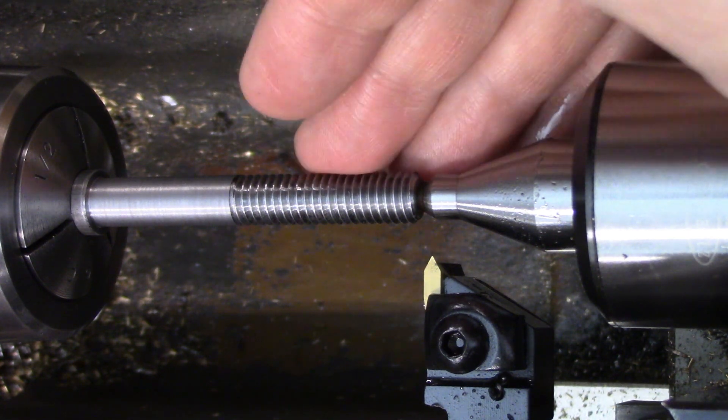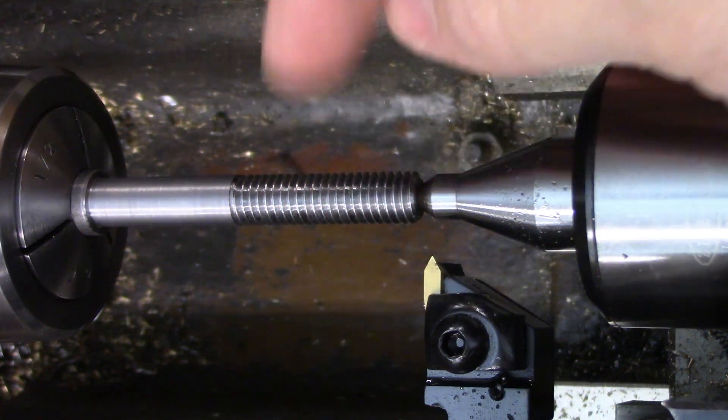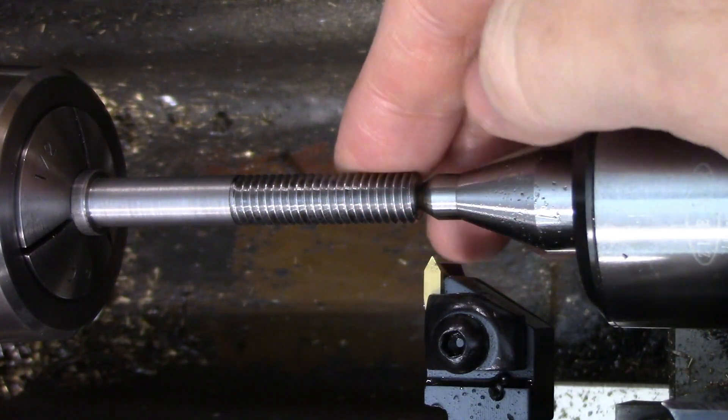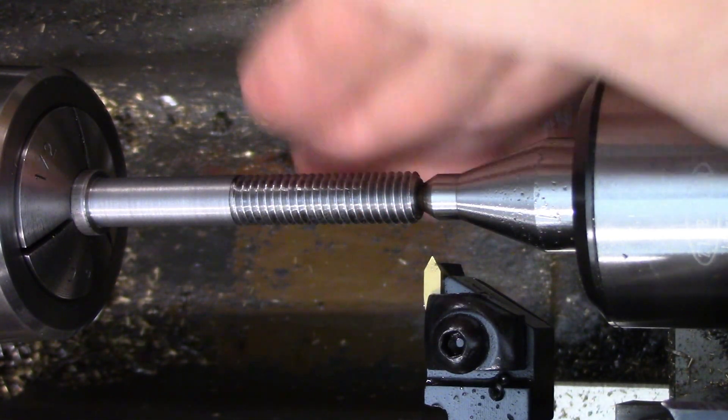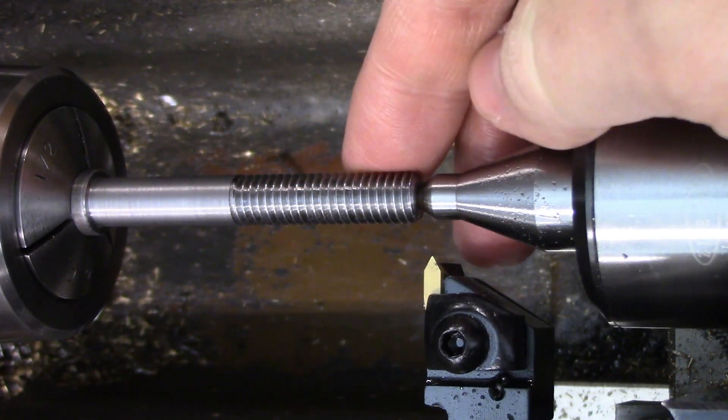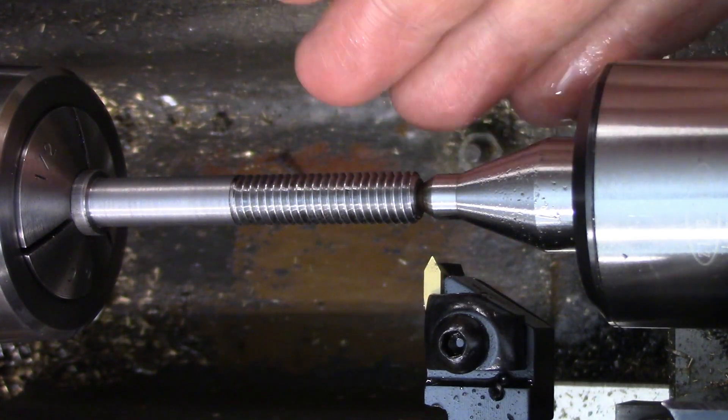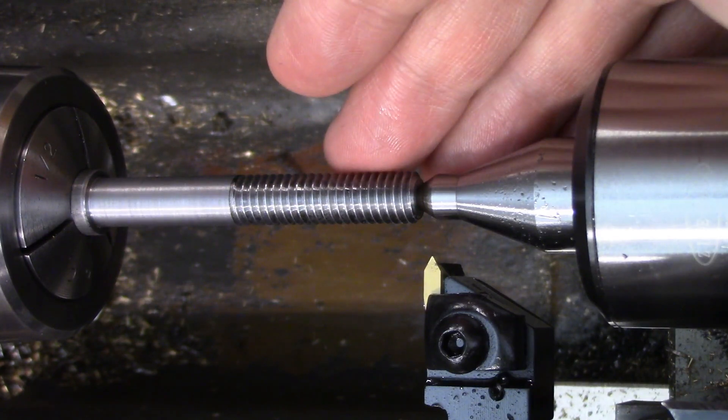Every single time I make a threading video, someone asks me down in the comments, why don't I use Joe Pye's one-wire method of measuring threads? So I figured I'd give it a shot and test it against the three-wire method. Let's look at how each one works, and then we'll compare the two.